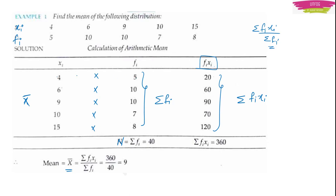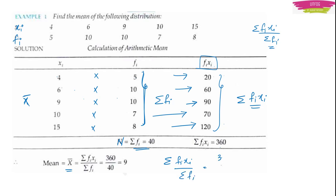Then I add all FiXi values to get summation FiXi equals 360. Now mean equals summation FiXi upon summation Fi, which is 360 upon 40. The zeros cancel — 36 by 4 equals 9. So the answer is 9. That is how you use the direct method.